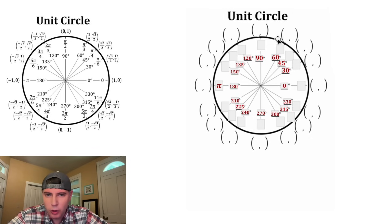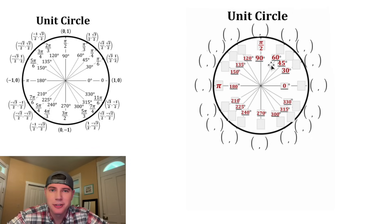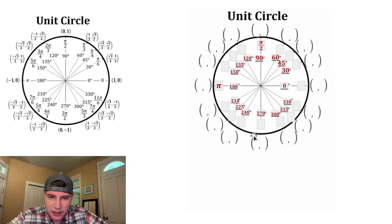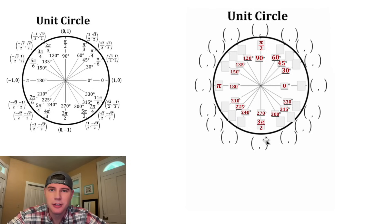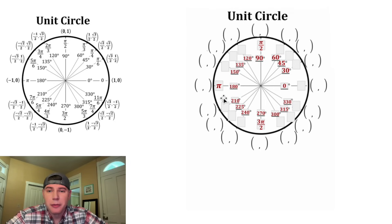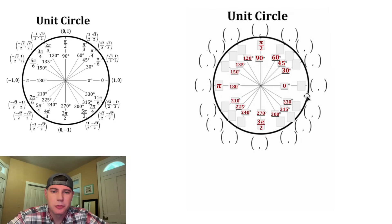Since this whole distance is pi, half of it is going to be pi over 2. And if we do a whole pi here and then another half pi, this becomes 3 pi over 2 — it's one and a half pies. All the way around the circle would be 2 pi. There's no spot for 2 pi, so we'll put in zero.